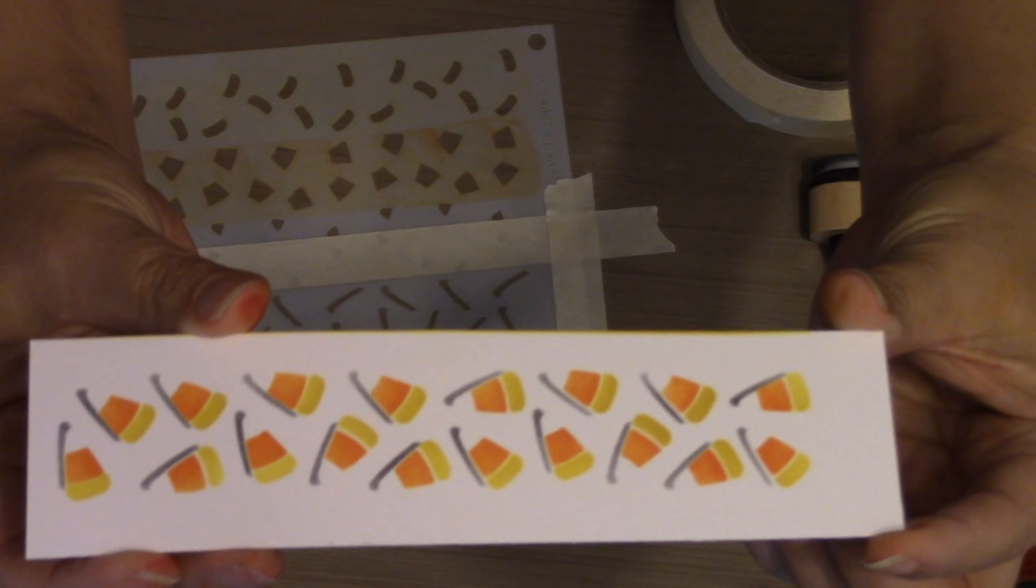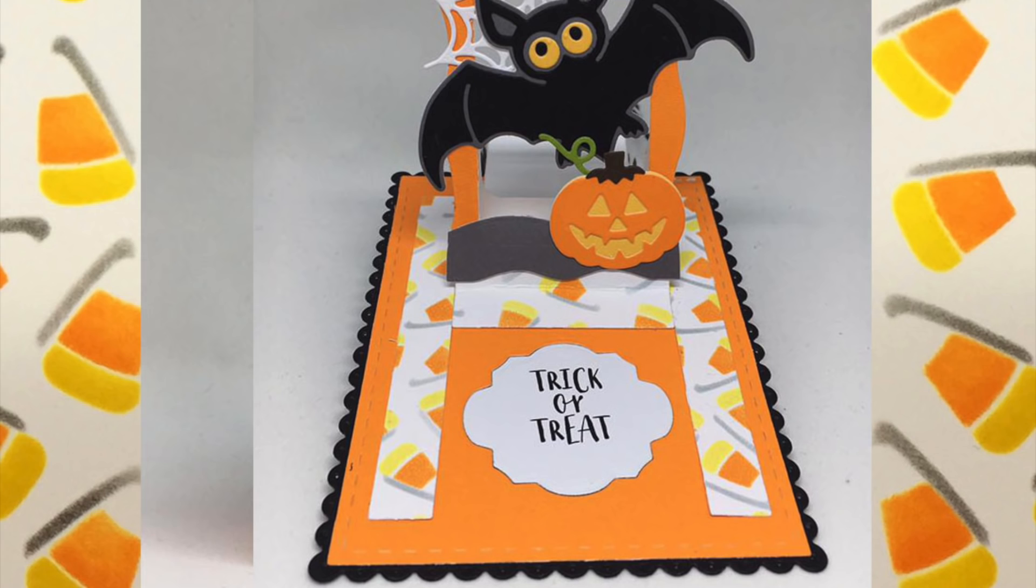Now if I repeat that, I could make an entire background like Kelly Booth did for this fun card. She die cut the Hanging Charm pull tab out of it and created this adorable Halloween card.